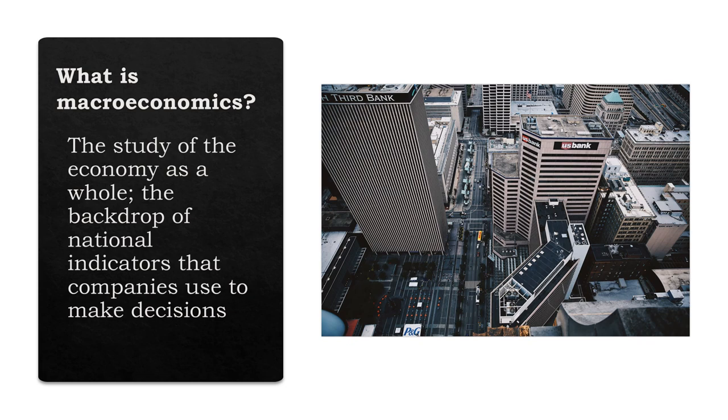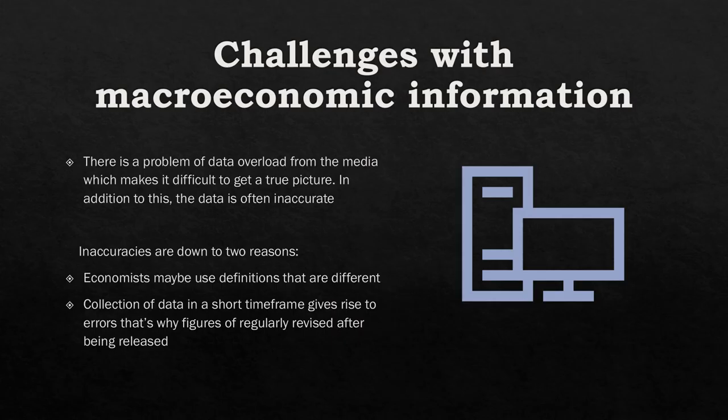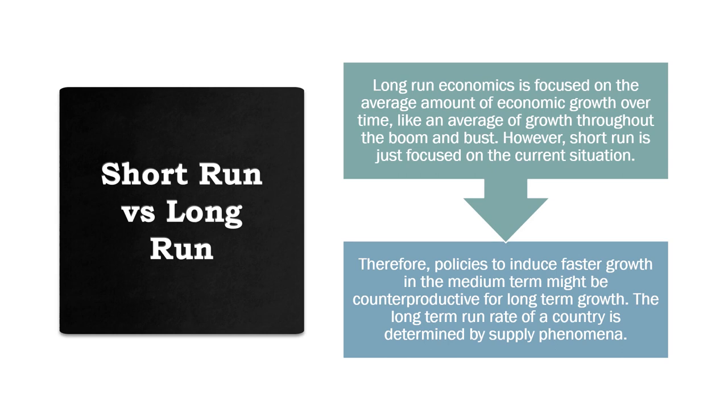The backdrop of that is the national indicators that companies and countries use to make decisions. There are a few challenges with macroeconomic information worth being aware of. Number one: economists sometimes use different definitions of things — the unemployment rate in Nigeria, for instance, is defined differently from what other countries use. Also, because data comes out every quarter in a really short time frame, sometimes there are mistakes, and countries have to revise their figures after they've already published them.